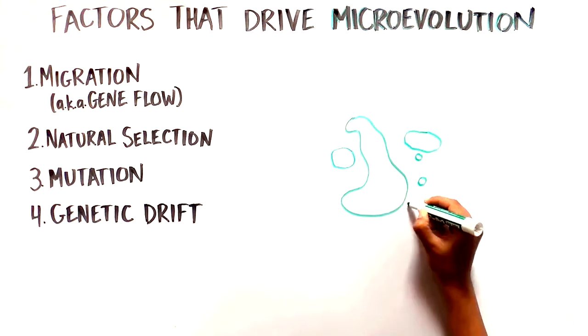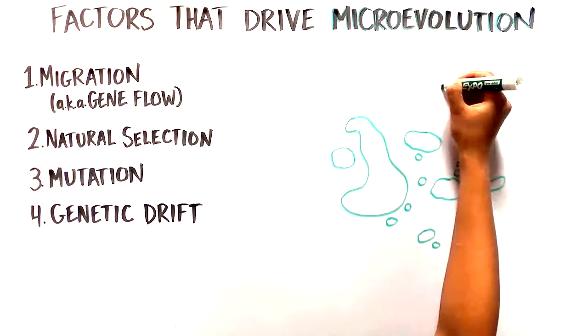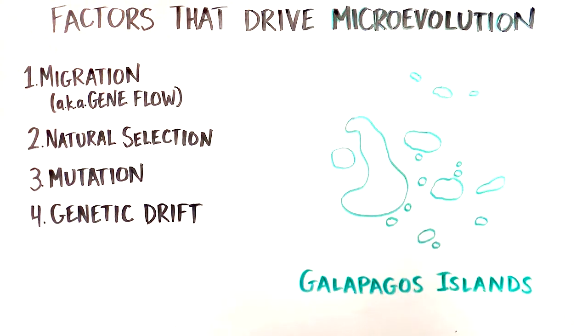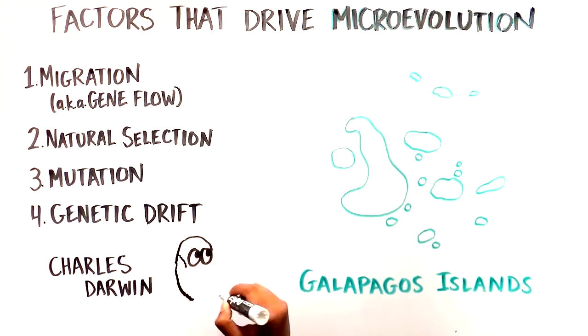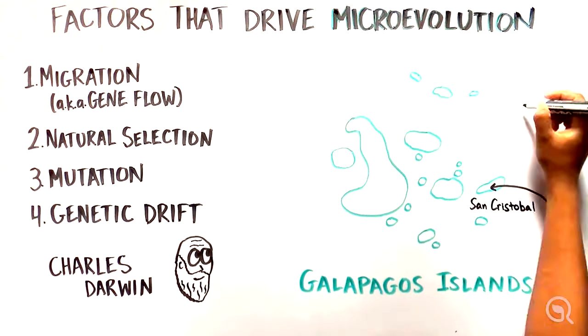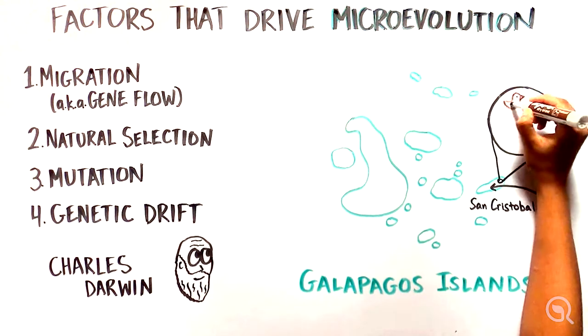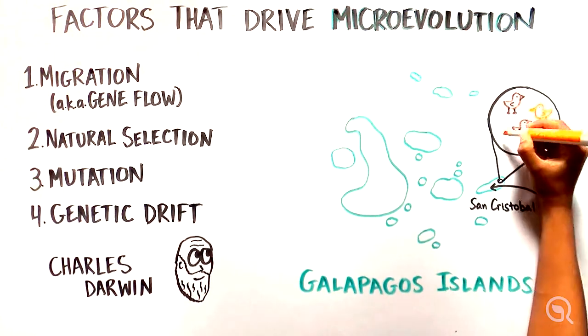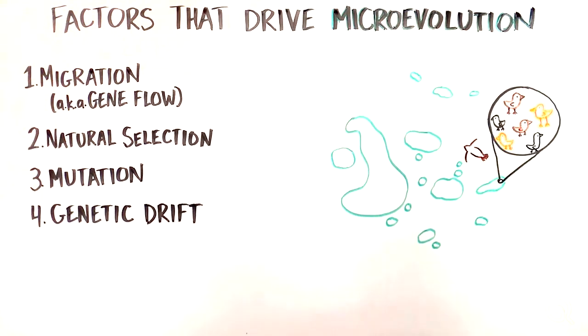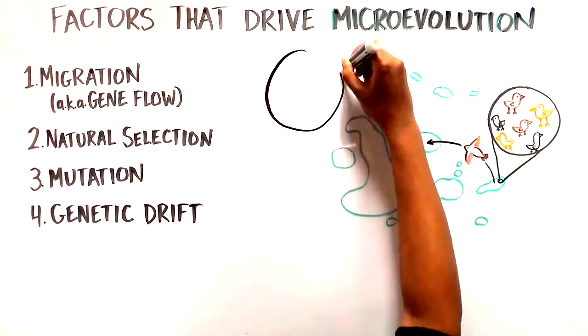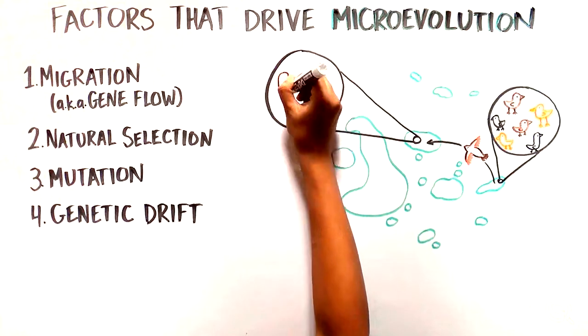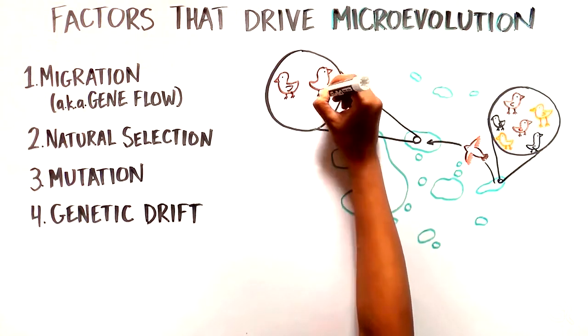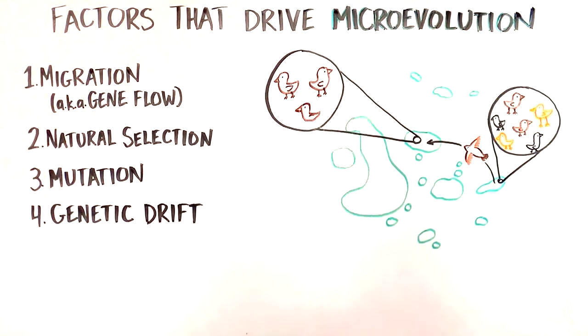Let's use the example of how evolution shaped the finches on the Galapagos Islands, which was studied by Charles Darwin back in the mid-1800s. A single population of finches originally landed on the islands and started living and breeding there. Imagine then a fraction of those birds flew over to a different nearby island. This migration event led to different frequencies of certain genes on the different islands, which can then persist if the birds on each island breed with each other.